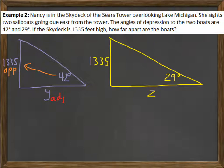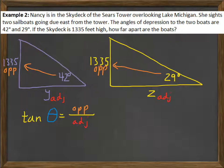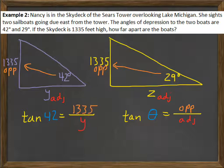I have an opposite and an adjacent on the first triangle, which means I'll be using the tangent function. Likewise, on the second triangle, I have also an opposite and adjacent, so we'll use the tangent function as well. Indeed, the only difference between the two triangles is the measure of the angle. So that will create the difference between Y and Z. Filling in the first equation, I'd have tangent of 42 equals 1335 over Y.